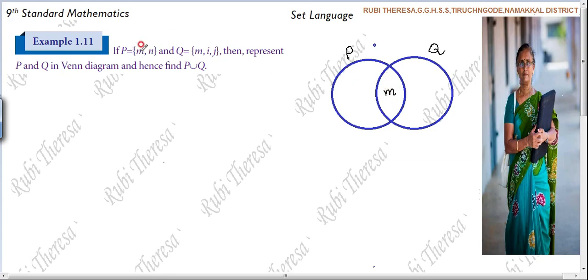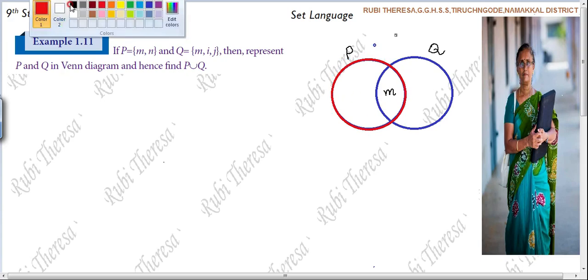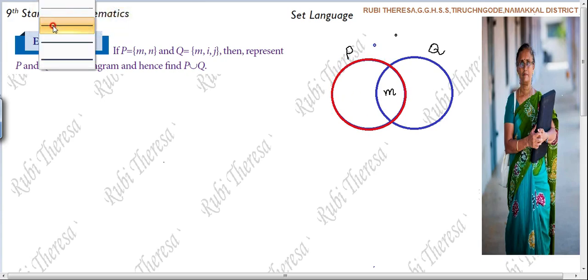M. Then what is P? M comma N. But M is already there in the set P. Suppose if you want to make it out different color also you can do it. But in the exam you should not do. So in the set P, M is there. So what is the remaining element? N.